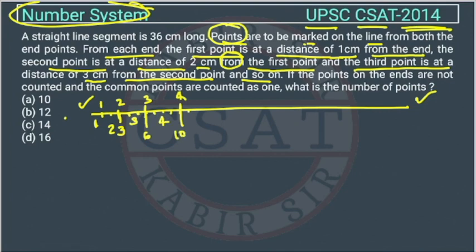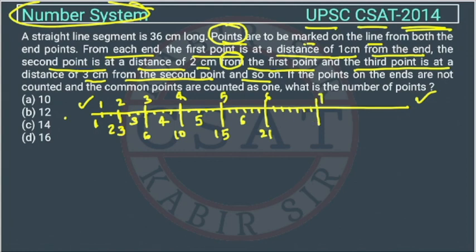The fifth point is at distance 5, total becomes 15. The sixth point is at distance 6, total becomes 21. The seventh point is at distance 7, total becomes 28. The eighth point is at distance 8, so 28 plus 8 is 36 — we have reached the end point.